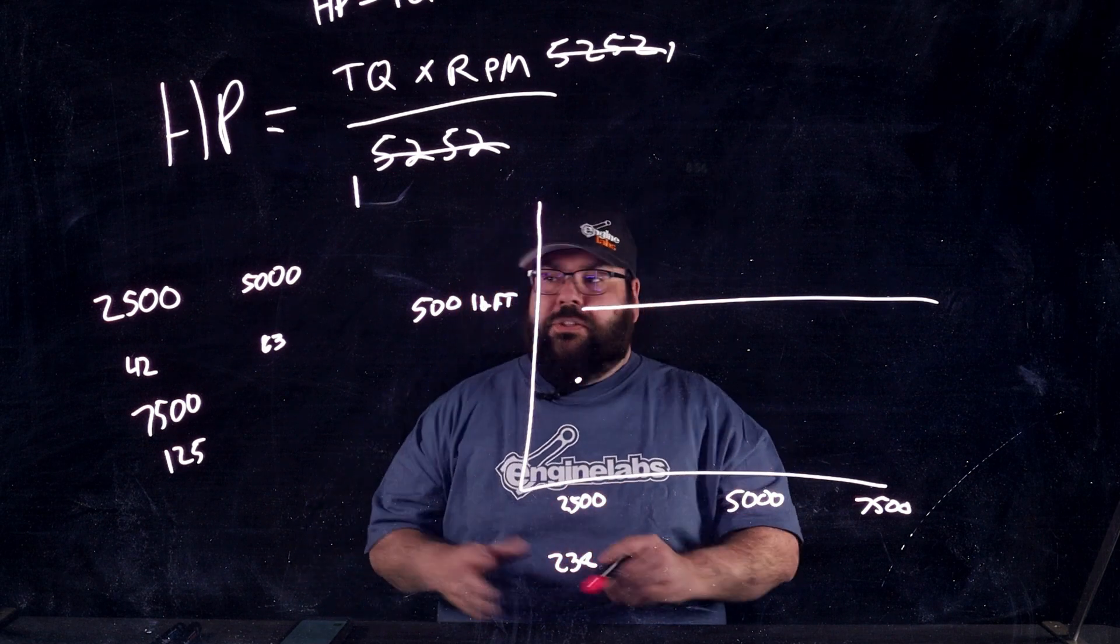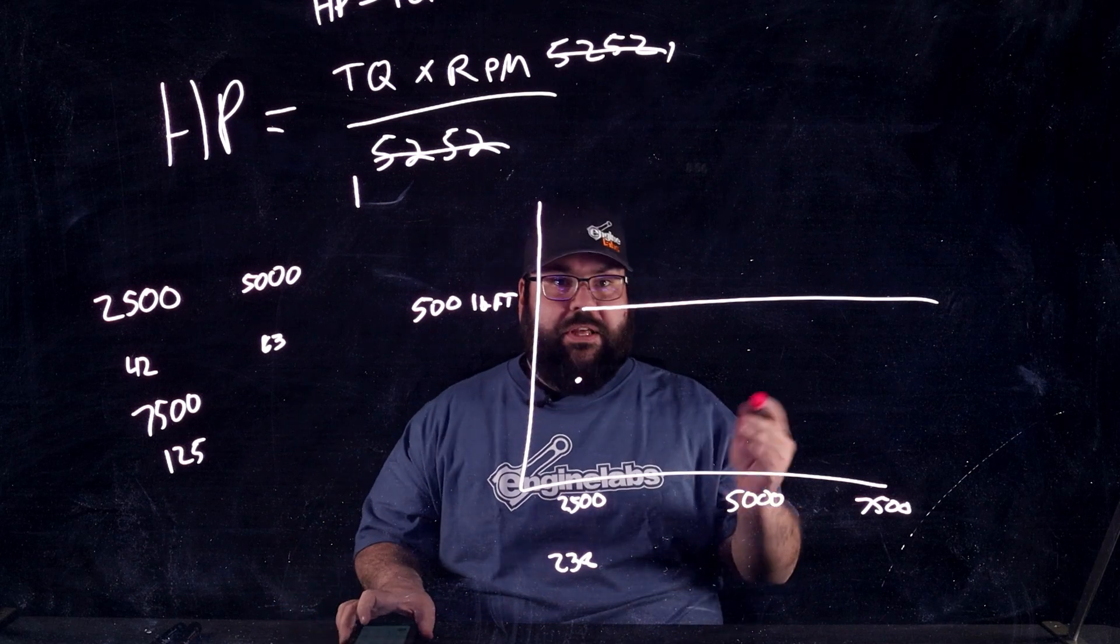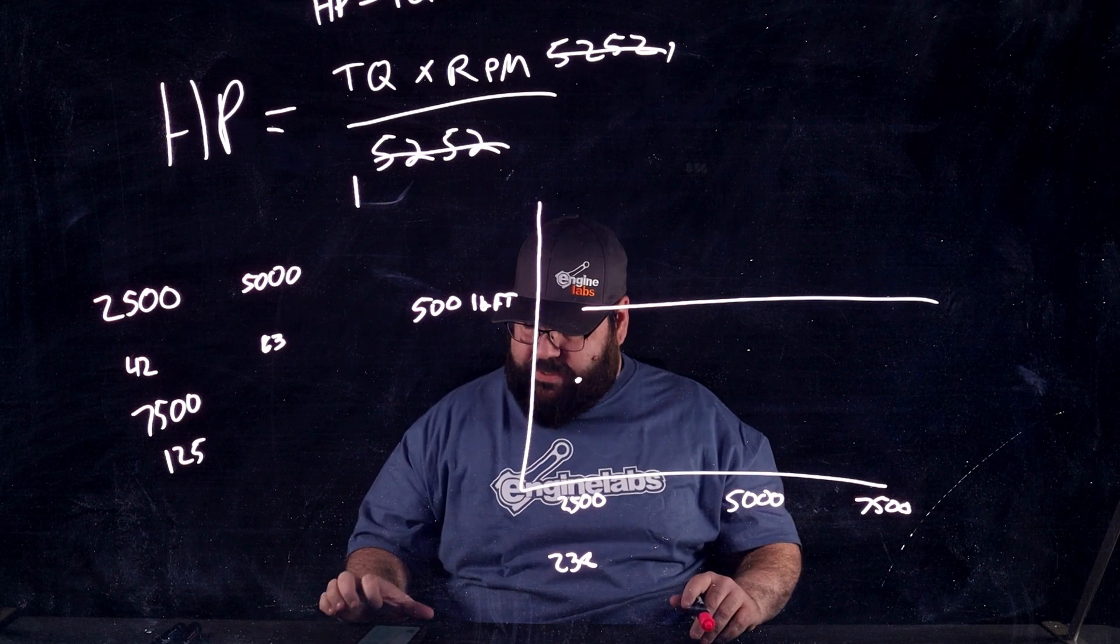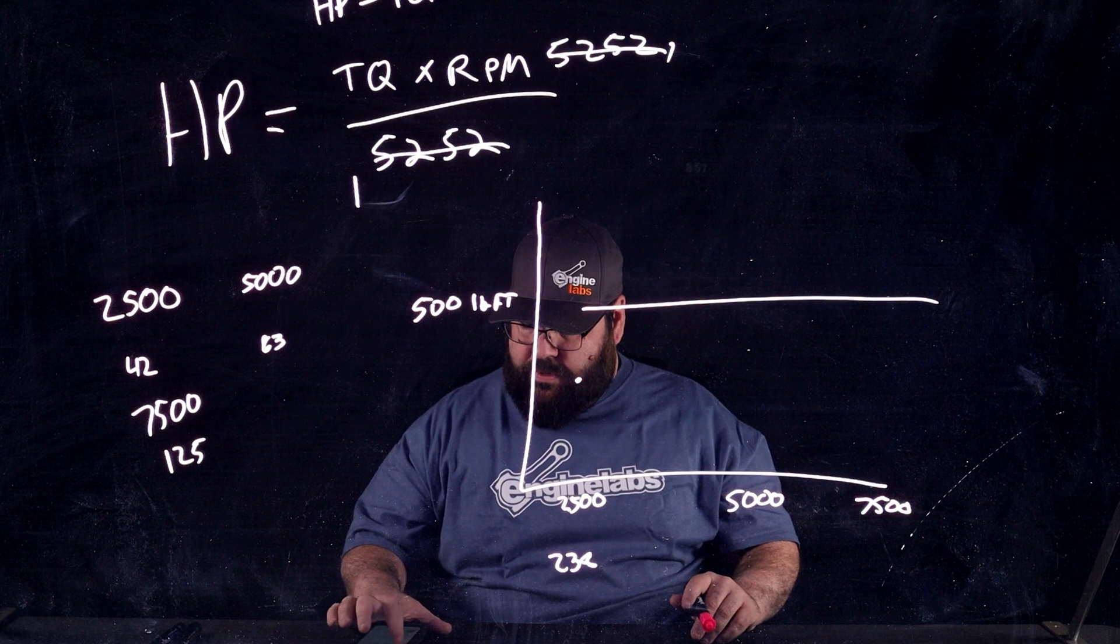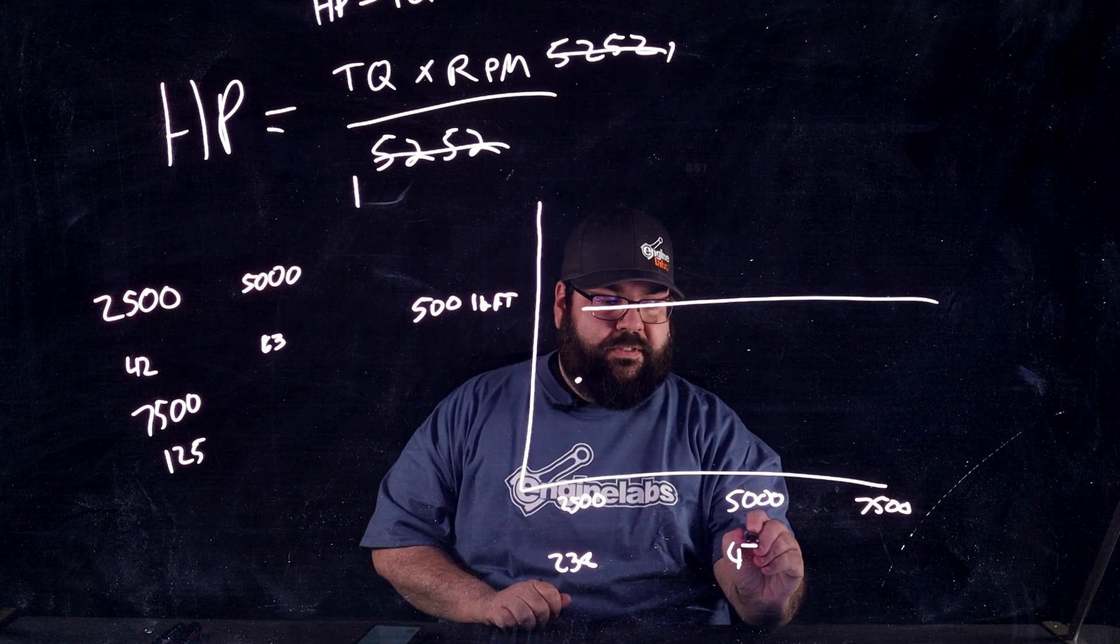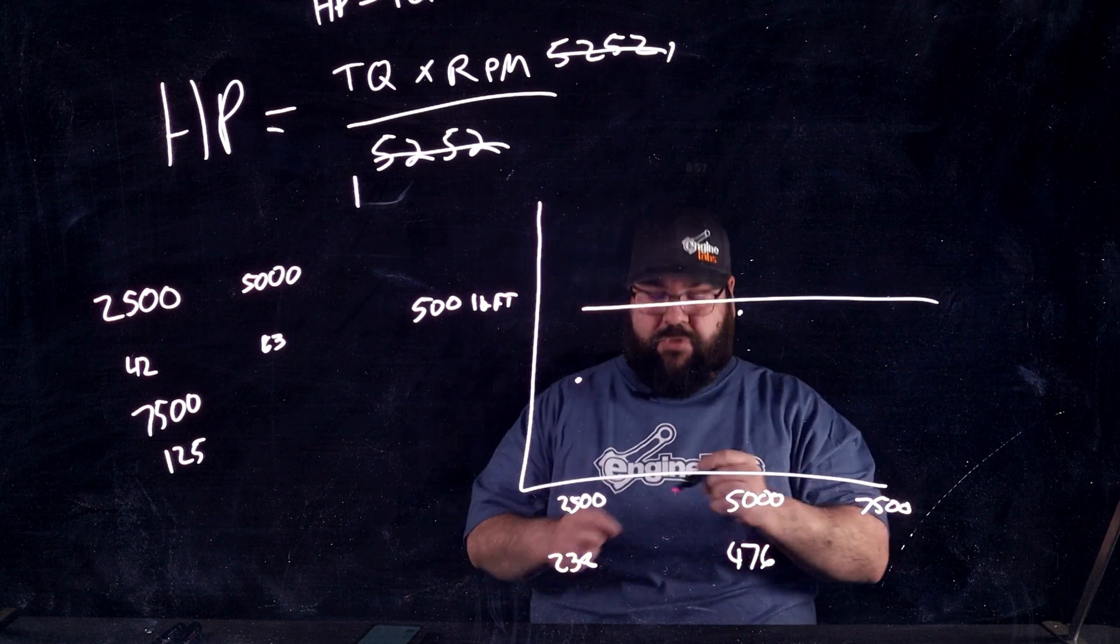Okay? So, if our equation holds, 5000 is going to come in at exactly double, right? So, let's see. 500 pound-feet of torque times 5000 RPM divided by 5252. And we get 476. Which is exactly double, right?